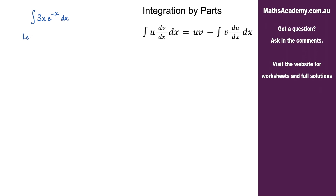The first thing I'm going to do is to assign u and dv/dx. So u is going to be equal to 3x and dv/dx is going to be e to the negative x. We go ahead and differentiate u, so du/dx is going to be equal to 3, and v — integrating dv/dx — that would be negative e to the negative x.